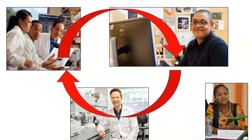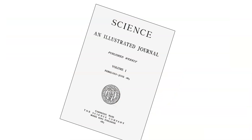Sometimes the revision and feedback process happens several times before an article is published. So if a manuscript survives the peer review process and gets the stamp of approval, it will be published in the peer-reviewed journal.